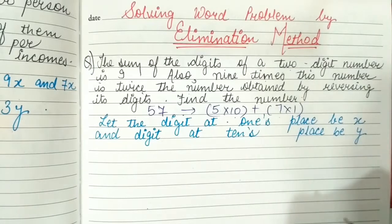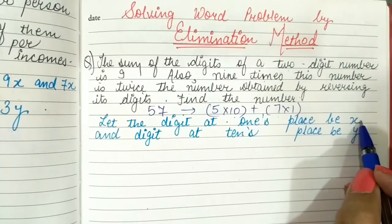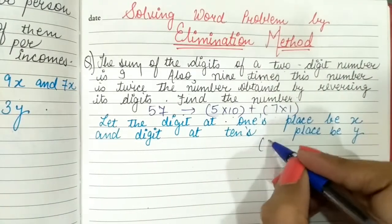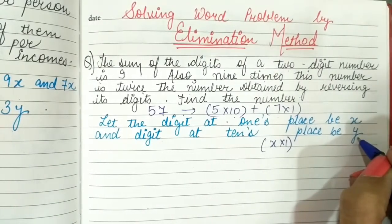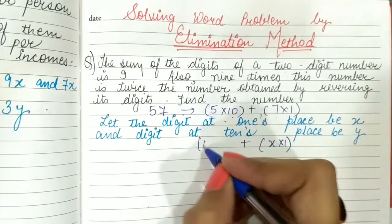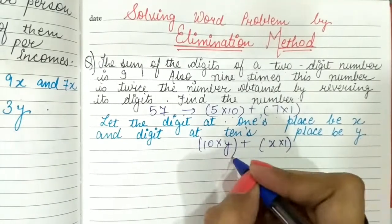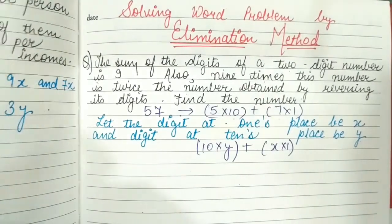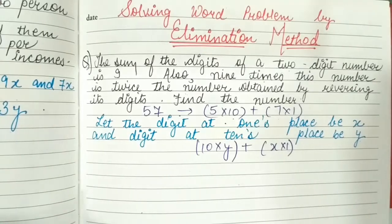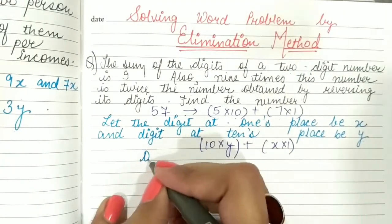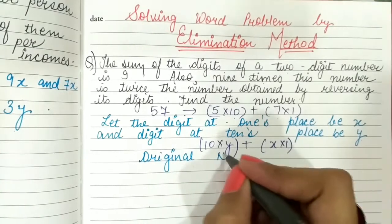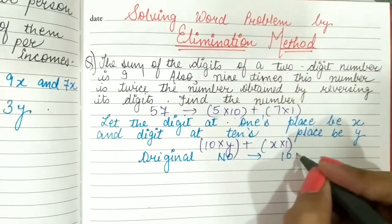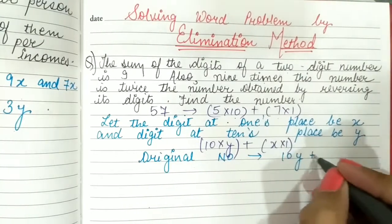In our number, the digit at the 1's place is x, so x will be multiplied by 1, and the digit at the 10's place is y, so y will be multiplied by 10. Therefore, the original number will be 10y plus x.